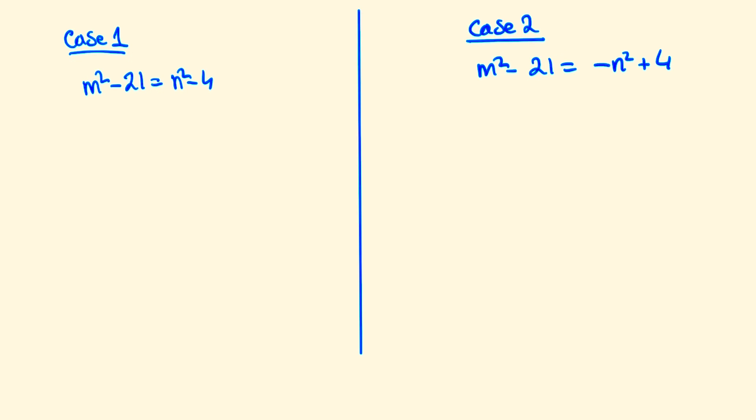With our two possible cases, we can consider Case 1 first. So this says that m^2 - n^2 = 17, and we can factorize the left side as (m + n)(m - n).